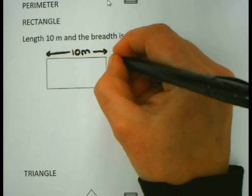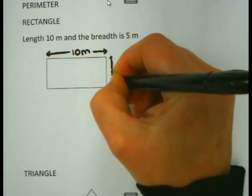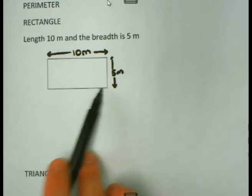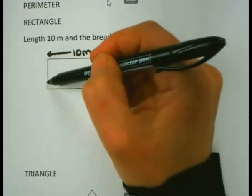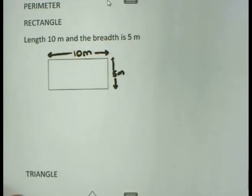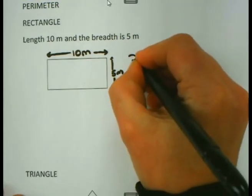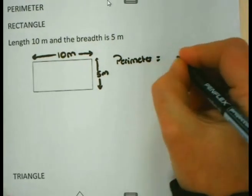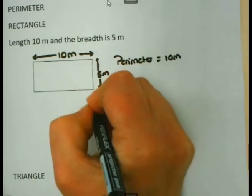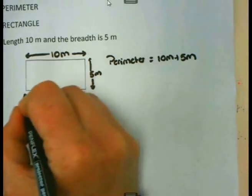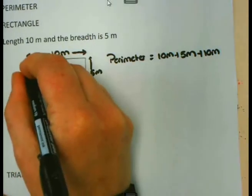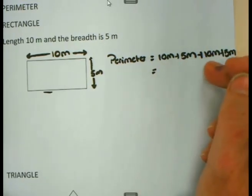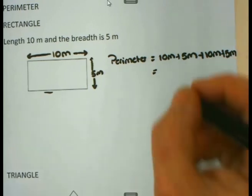And the breadth is 5 meter. Then you must remember since it is a rectangle, if that side is 10 meter, this side is 10 meter as well. And if that is 5 meter, this is 5 meter as well. So when I am going to calculate the perimeter, I can simply say I must add all these different lengths. In other words, 10 meter plus 5 meter plus 10 meter again, plus 5 meter, which will give me 10 plus 5 is 15, plus 10 is 25, plus 5 is 30 meter.